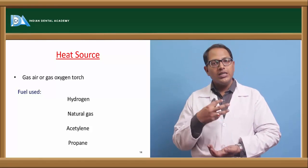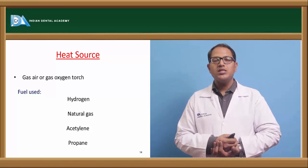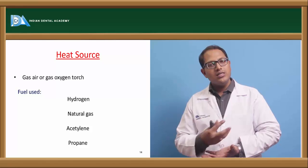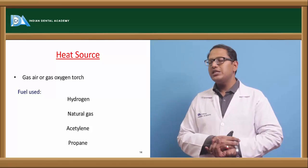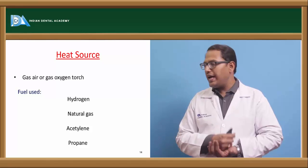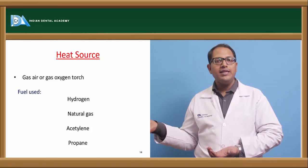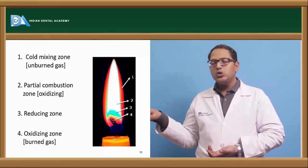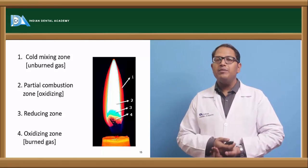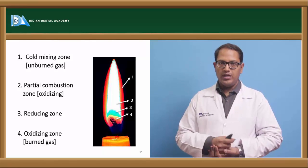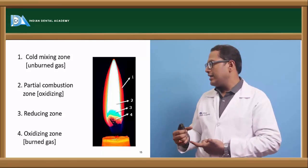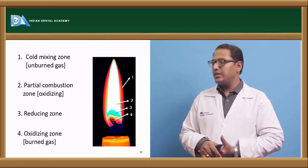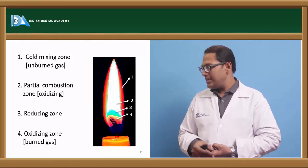Now coming to what are the heat sources which are present. The heat sources present are gas air or gas oxygen torches. The fuel which is used can be hydrogen, nitrogen gas, propane, or acetylene for example. This particular zone of full flame can be classified into four zones: a combustion zone, an induction zone or oxidizing zone, a reducing zone or a burned zone that is also called an oxidizing zone.